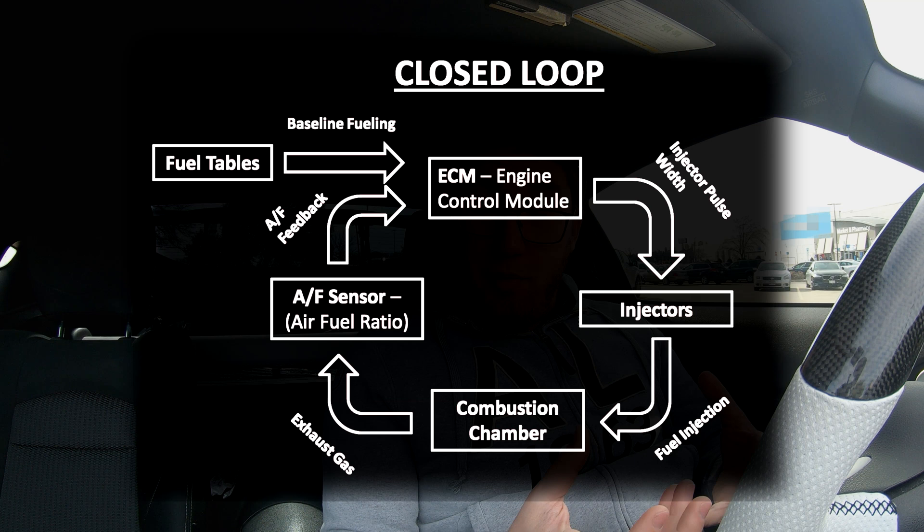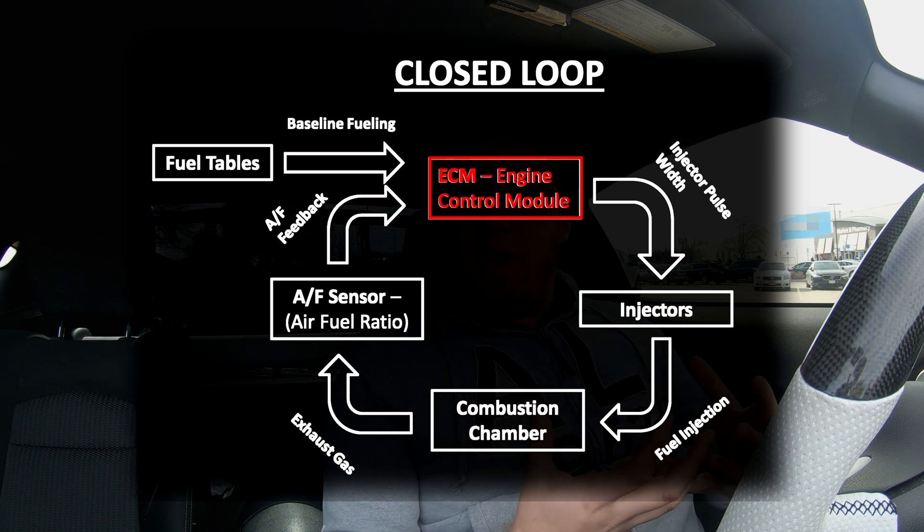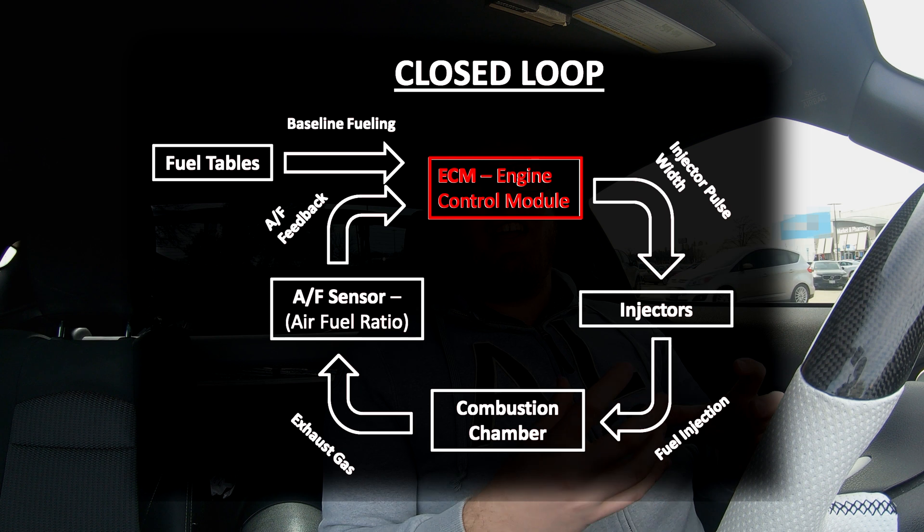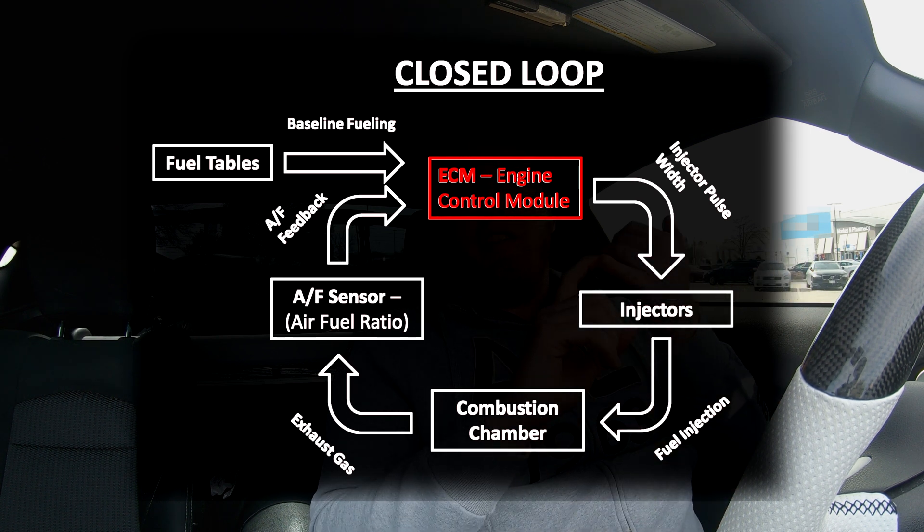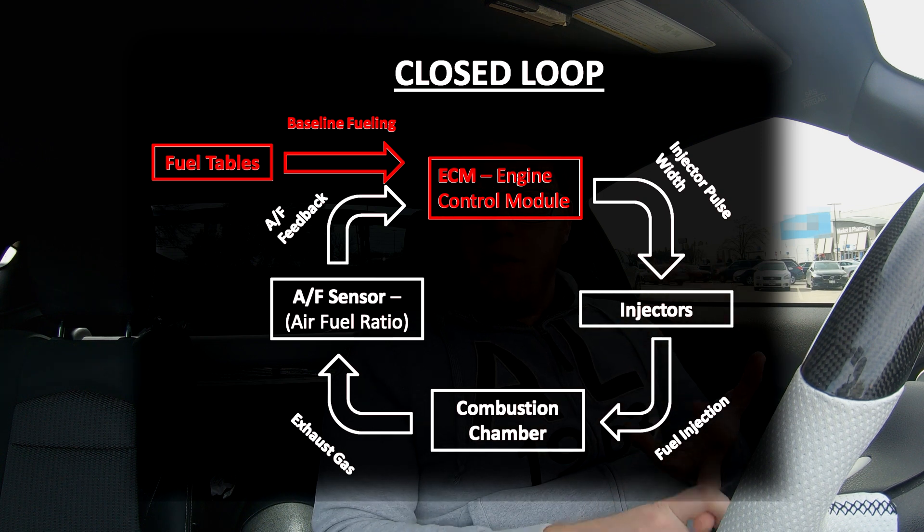Let's start by talking about closed loop operation, which is also known as feedback control. The first stage in this control loop is a fuel calculation from your ECM. Your ECM calculates the amount of fuel your car needs based on the programmed fuel tables, your long and short term fuel trims, and inputs from a variety of sensors — including your MAF sensor, MAP sensor if your car has one, as well as your AFR sensor, camshaft, and crankshaft position sensors.